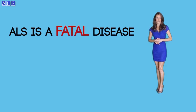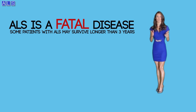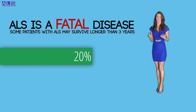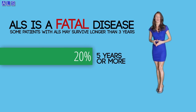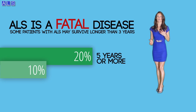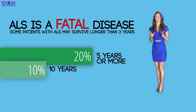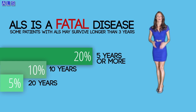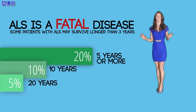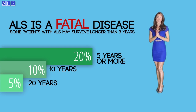ALS is a fatal disease with a median survival time of 3 years after the appearance of symptoms. Some patients survive longer than 3 years; up to 20% survive 5 years or more, about 10% live for about 10 years, and about 5% survive up to 20 years. There are cases in which the disease has stopped developing further, and a small number of patients in which symptoms have reversed. Hopefully researchers will find a treatment and cure very soon.